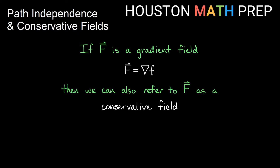If we have a vector field F and it's a gradient field, we're just saying that F is the gradient of some scalar function, so we think of F as some del f. We also call our vector field conservative. So a conservative field is another name for a gradient field — they are the same thing.